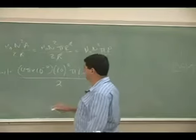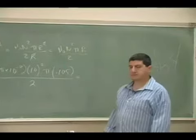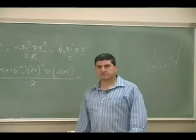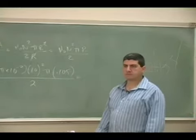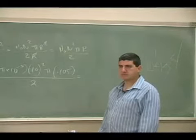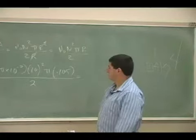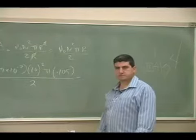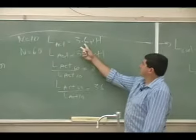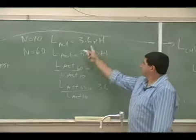This is for 10 turns. So, based on this, it should give us 3.6 microhenries, if the formula is exactly right, should give us 3.6.